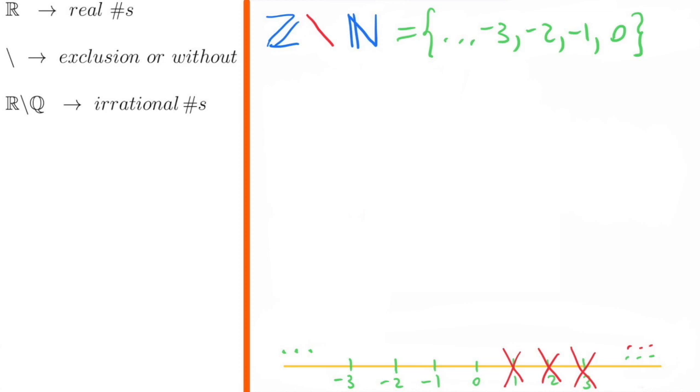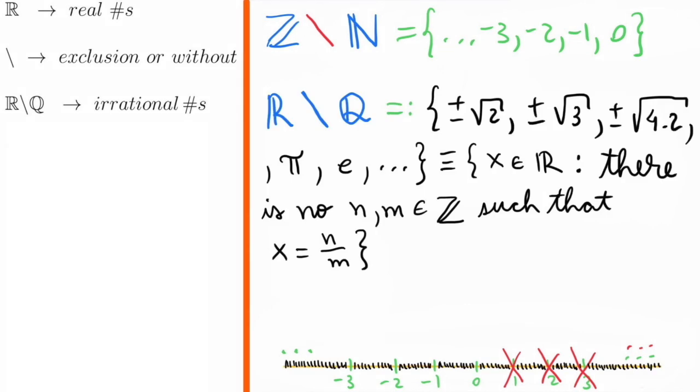Weirdly, it is also dense in the real line, but we will not enter in details here about why and how. Examples of irrational numbers are the squared root of 2, of 3, of 4.2, etc. positive or negative, pi, the Euler's number e, etc. More generally, the irrationals are all real numbers that cannot be expressed as a fraction of integers.